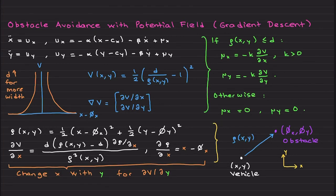Welcome back. I would like to talk about obstacle avoidance with potential field method. Actually, it is a gradient descent method, but within the context of motion planning, we call this method the potential field. You are going to see why.